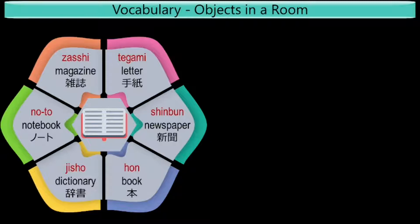Next is Shimbun, which means newspaper. It is made of two characters: Shin, which means new, and Bun, which means to hear or to listen. Next is Hon, which means book. Jisho means dictionary. Nooto is the short form of notebook. And the last one is Zashi, which means magazine or journal.